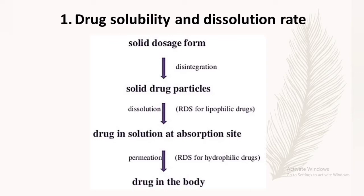The first physicochemical property affecting drug absorption is solubility and dissolution rate. Solubility is defined as the maximum amount of solute dissolved in a given solution under standard conditions of temperature, pressure, and pH. Dissolution rate is defined as the amount of solute that goes into solution per unit time under standard conditions of temperature, pressure, pH, solvent composition, and constant solid surface area.